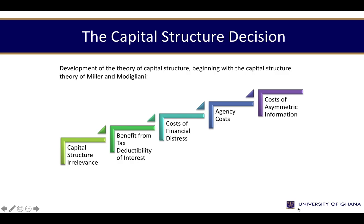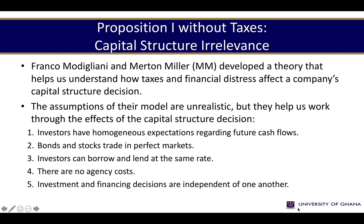We are going to work through the capital structure relevance story, then look at the benefits that tax deductibility of interest brings, then factor in costs of financial distress, agency costs, and asymmetric information. Starting with Proposition 1 without taxes — Modigliani and Miller developed this theory to help us understand how taxes and financial distress affect capital structure decisions. The key assumptions are: investors have homogeneous expectations regarding future cash flows, bonds and stocks trade in perfect markets, and investors can borrow and lend at the same rate.